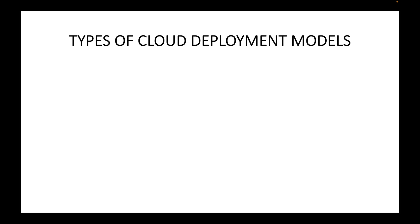Hello, in this session we are going to look at the different types of cloud deployment models. There are different ways that you can deploy your cloud so that you can start using that cloud to set up your infrastructure. Just a quick recap of what we did in the last session — we looked at the different types of cloud computing: infrastructure as a service, platform as a service, and software as a service.